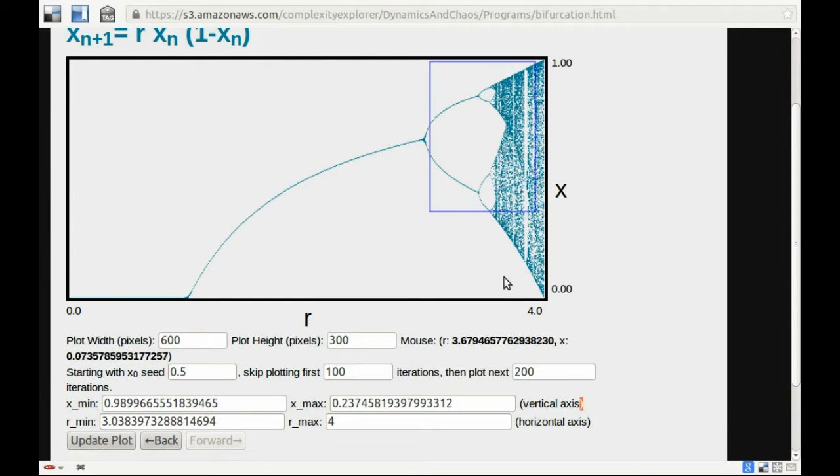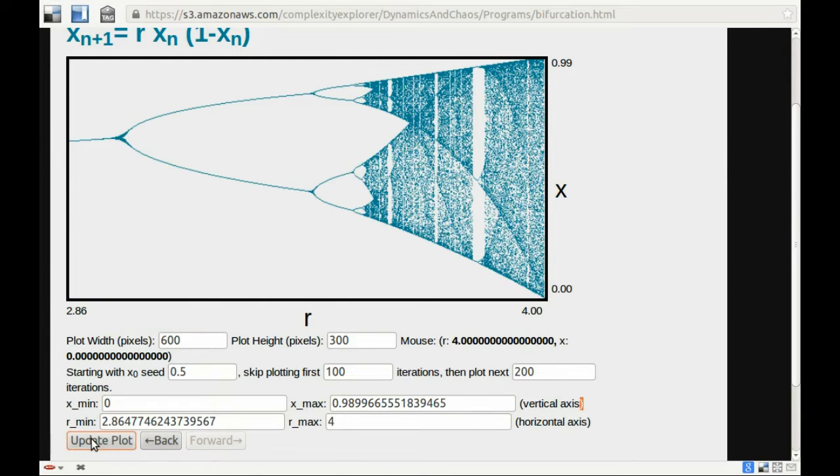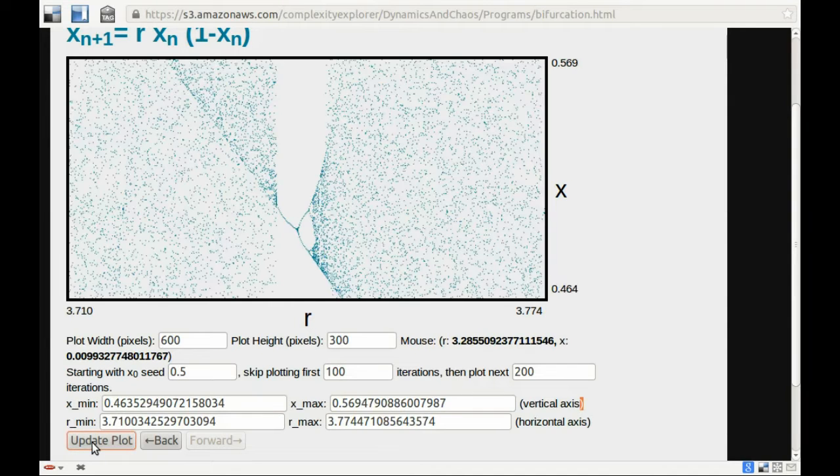And we see that period doubling again and again. I'm having a hard time with the mouse here. We see that period doubling again and again as we zoom in. So here I've zoomed in a bunch. Let's zoom in to this region here, and there is a period doubling again. I'm going to zoom in here.